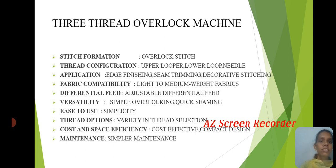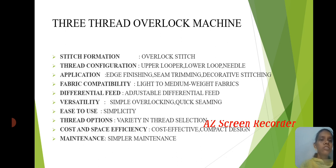The 3-thread overlock machine features an overlock stitch formation. Thread configuration includes upper looper, lower looper, and needle. Applications include edge finishing, seam trimming, and decorative stitches. Fabric capability ranges from light to medium weight fabric, with adjustable differential feed for variability.